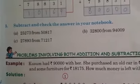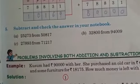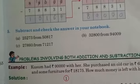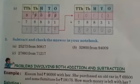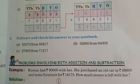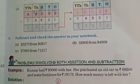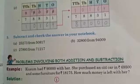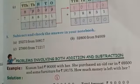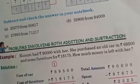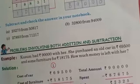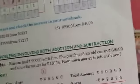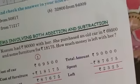Now, I am going to do the last sum. That means, the fifth sum of the statement. Subtract and check your answer in your notebook. Now, subtract means you have to find the difference. Now, the first statement is given that 25,273 from 50,870. Students, keep in mind that the number which is written after the word from, you have to write that number on your notebook firstly.